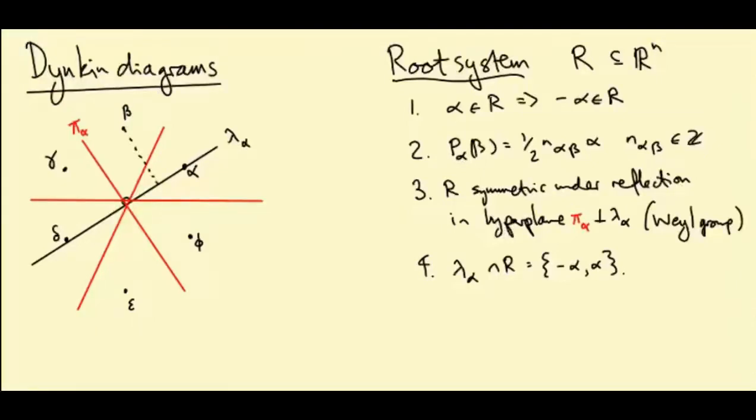Then I end up with a half integer multiple of alpha. So a half N_alpha_beta times alpha. So N_alpha_beta is an integer associated to alpha and beta.